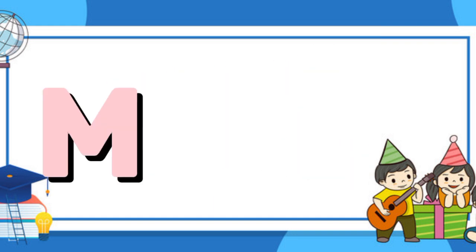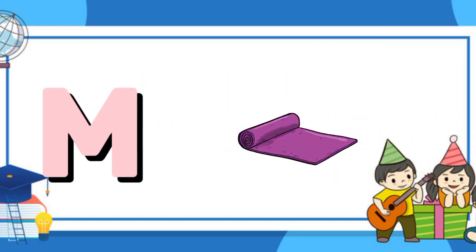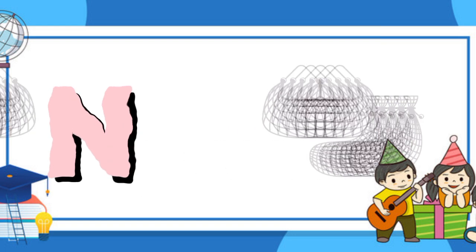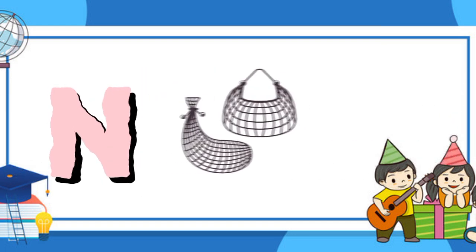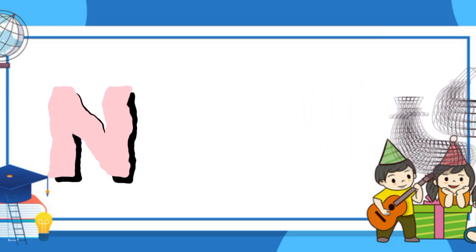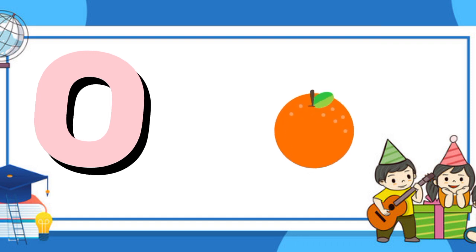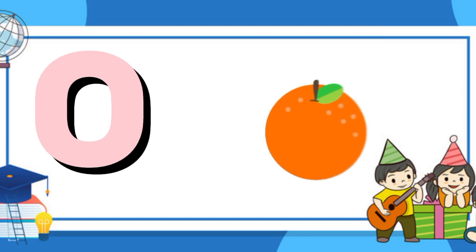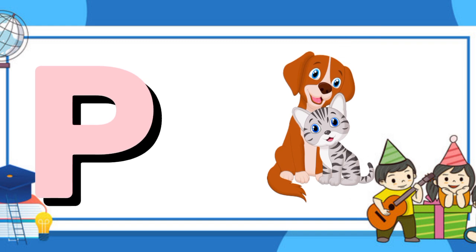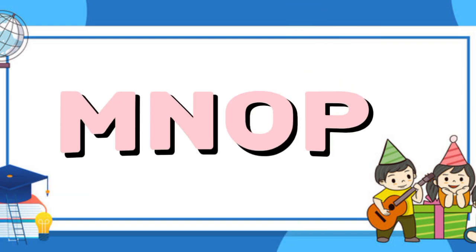M is for mat, m-m-mat. N is for net, n-n-net. O is for orange, o-o-orange. P is for pet, p-p-pet.